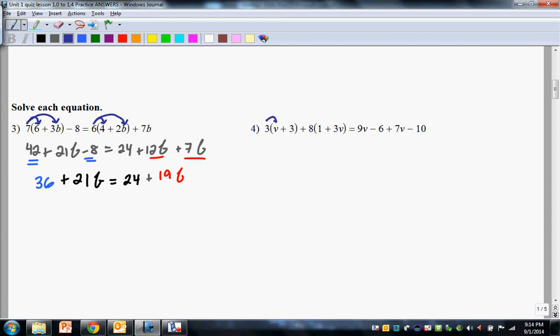For the one on the right, again, you start with the distributive property. And there's nothing to distribute on this side. So the next line reads, say it out loud, 3 times b is 3z plus 3 times 3 is 9, plus 8 times 1 is 8 plus 8 times 3 is 24v equals 9v minus 6 plus 7v minus 10. Very important, you collect before you cross the equal sign.